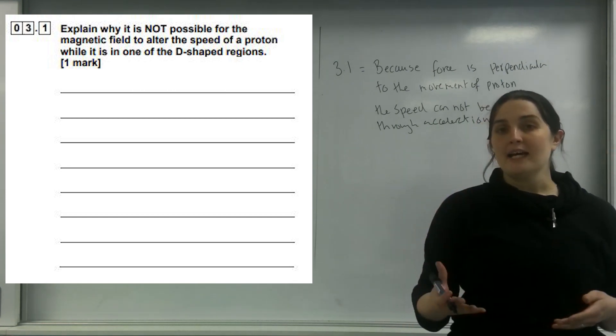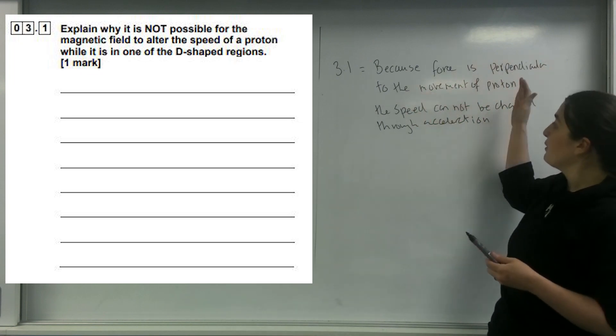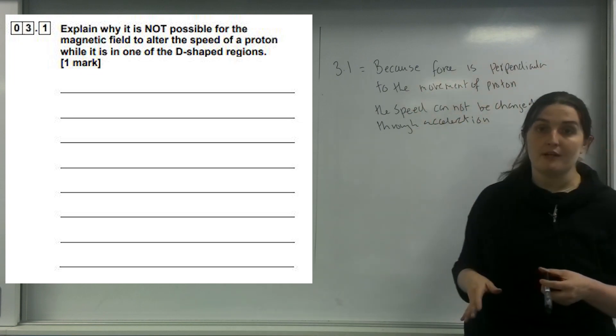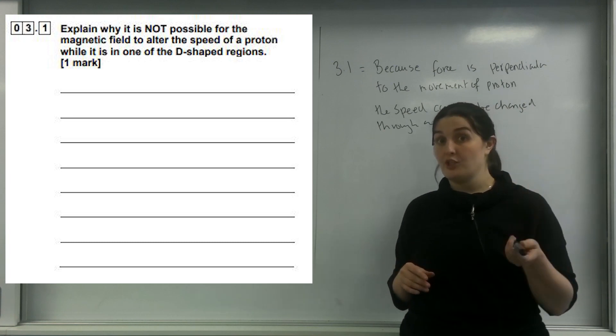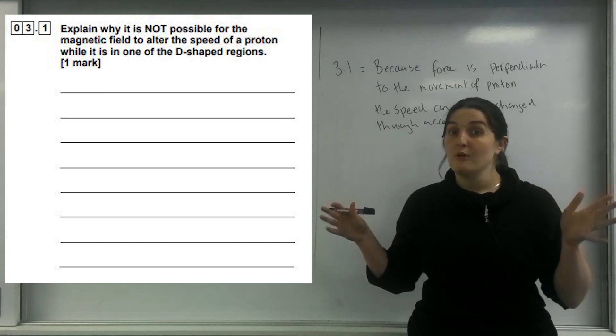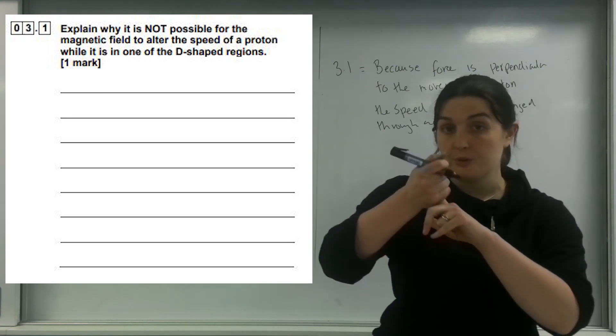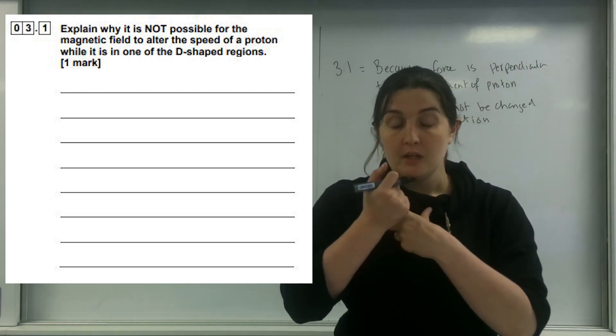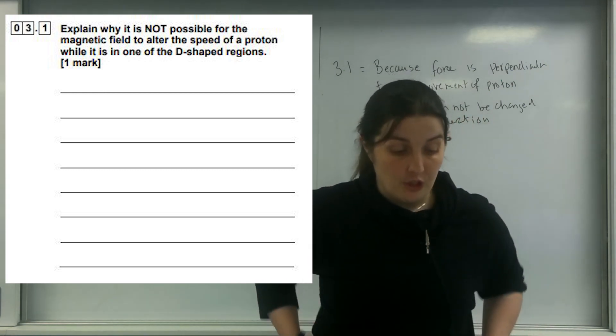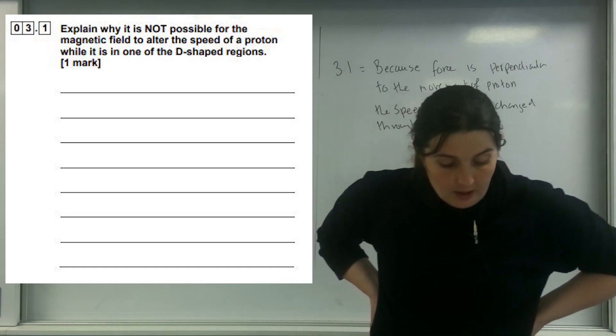Because the force is perpendicular to the movement of the proton, the speed cannot be changed through acceleration. You can't physically change its speed, but you can change its direction. That's circular motion. Remember if velocity is perpendicular to the force, it is going to move in circular motion.